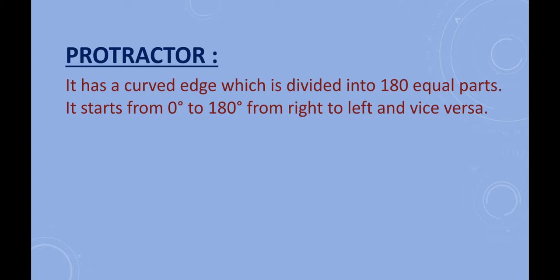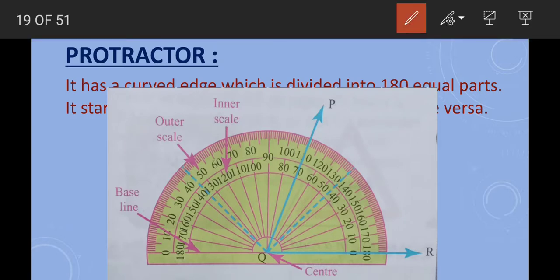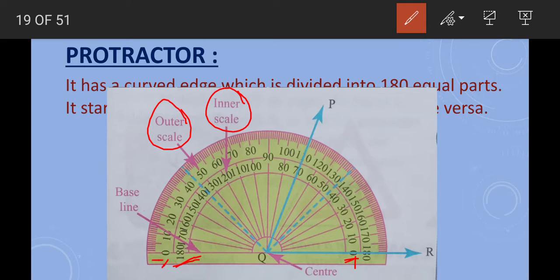Looking at an example of a protractor, there are two scales. The inner scale starts from the right side at 0 degrees and moves towards the left side up to 180 degrees. The outer scale starts from the left side at 0 degrees and increases — 10, 20, 30, 40 — reaching 180 degrees on the right side.